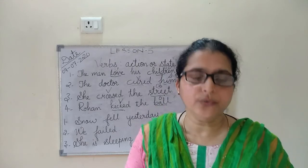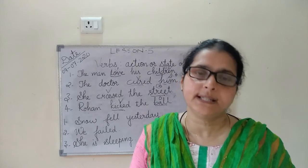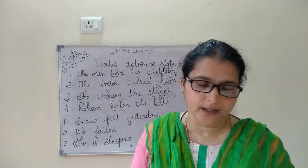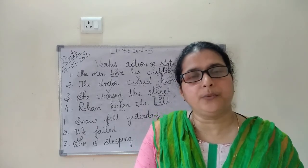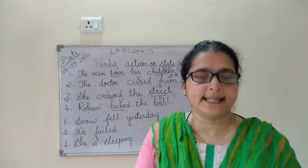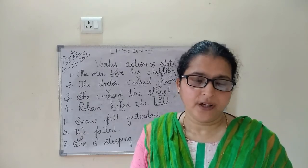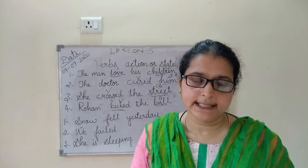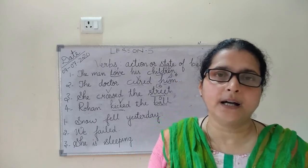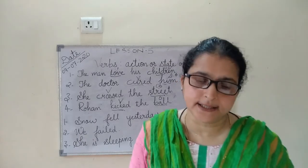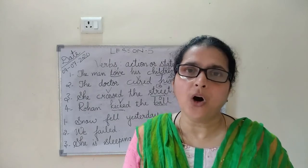And now verb of being. What is the verb of being? It is a situation. For example: be, have, like, think, is — all these come under verb of being.